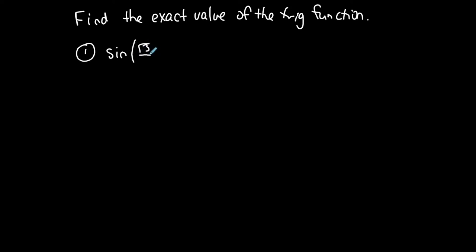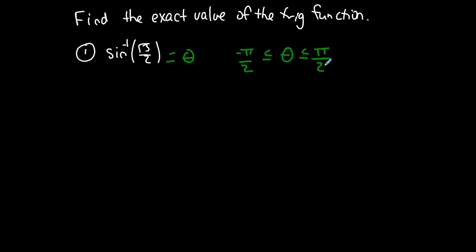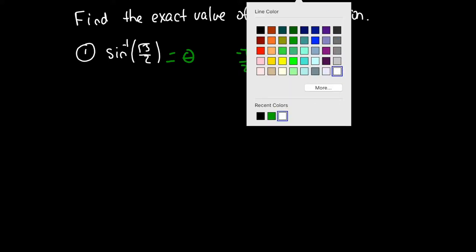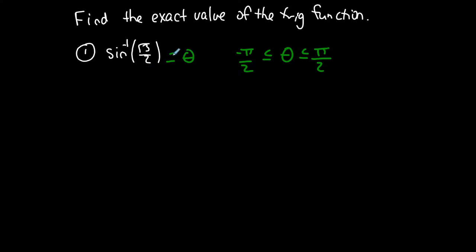Let's find the exact value of sine inverse of the square root of three over two. Anytime you want an inverse trigonometric function, it is always equal to an angle. For sine inverse, that angle is restricted between negative pi over two and pi over two. If sine inverse of a ratio equals an angle, then I can rewrite it as sine of the angle equals the ratio.